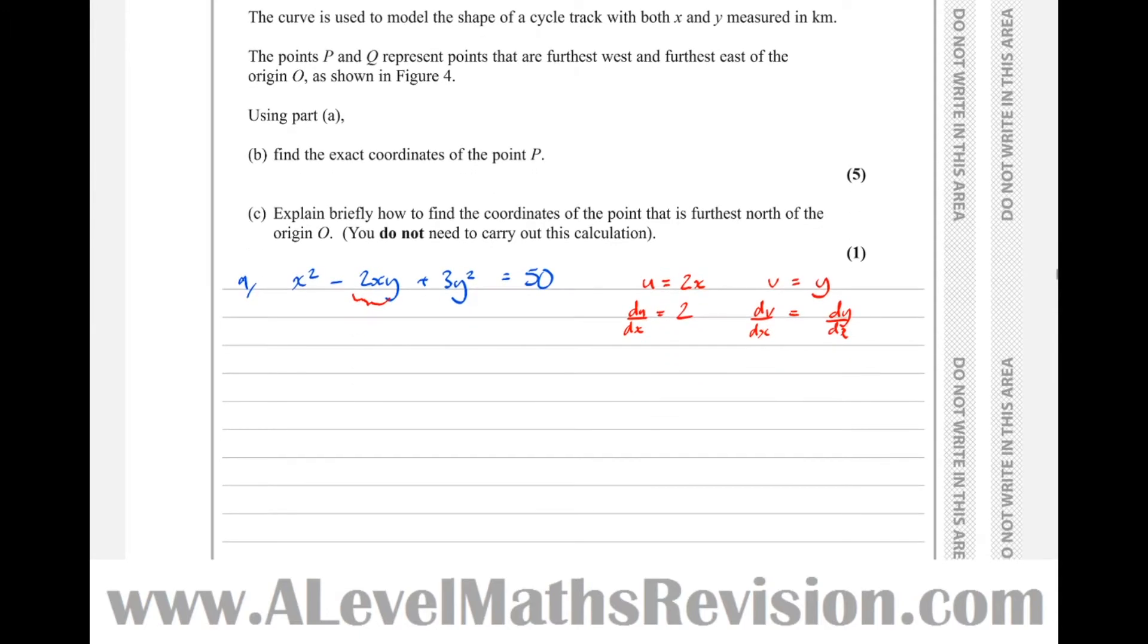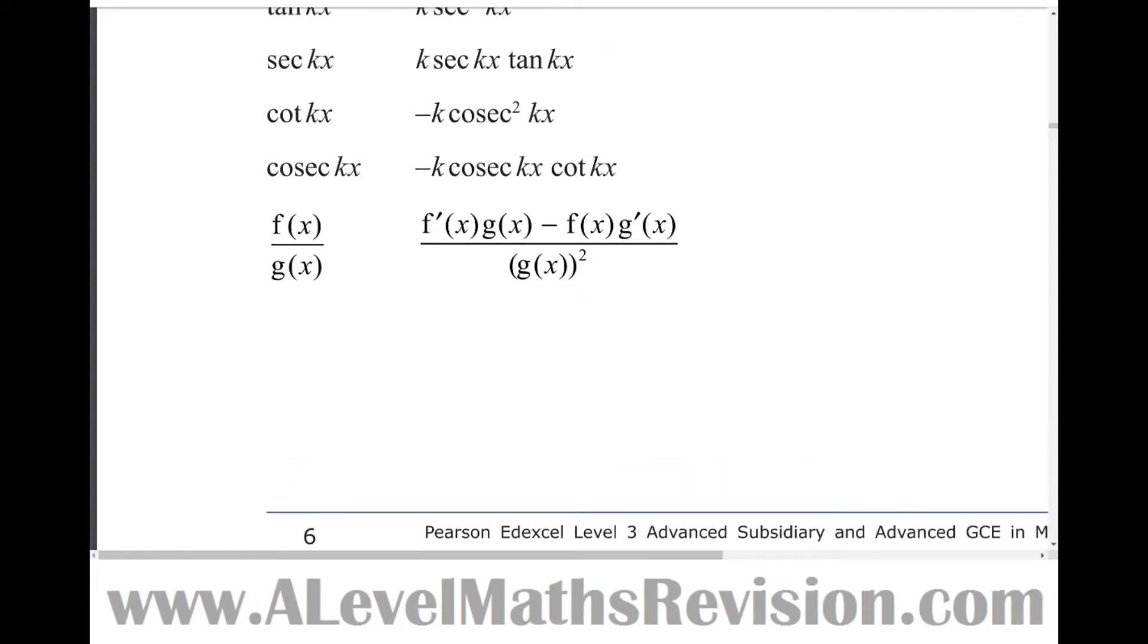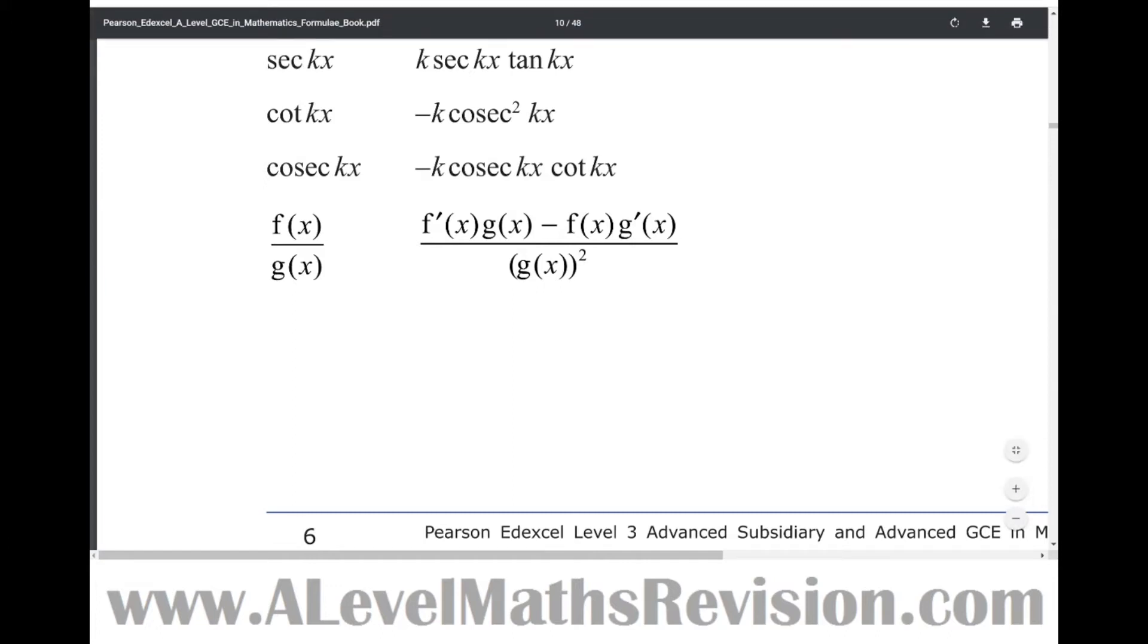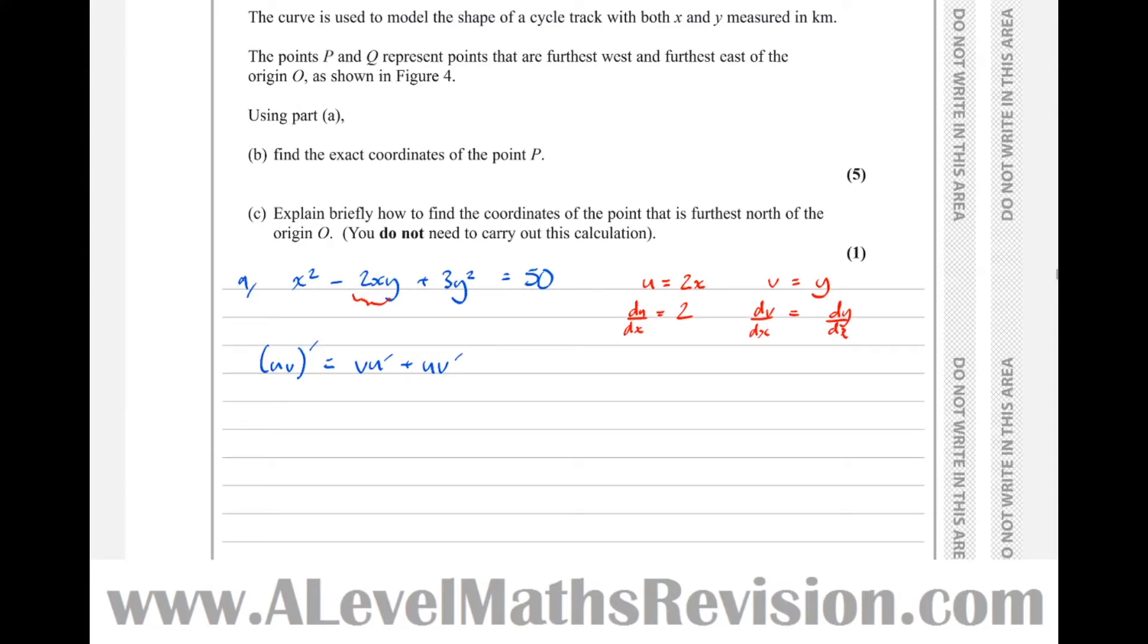The product rule states that uv differentiated equals v u dash plus u v dash. You can get that from the formula sheet. The quotient rule is very much like the product rule - just ignore the denominator and it's the top with a plus instead of a minus.